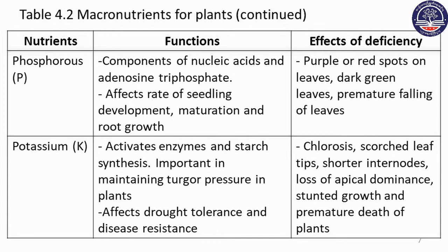In addition to phosphorus, deficiency symptoms include purple and red spots on leaves, and inhibited growth. The affected leaves will show premature dropping of fruits.